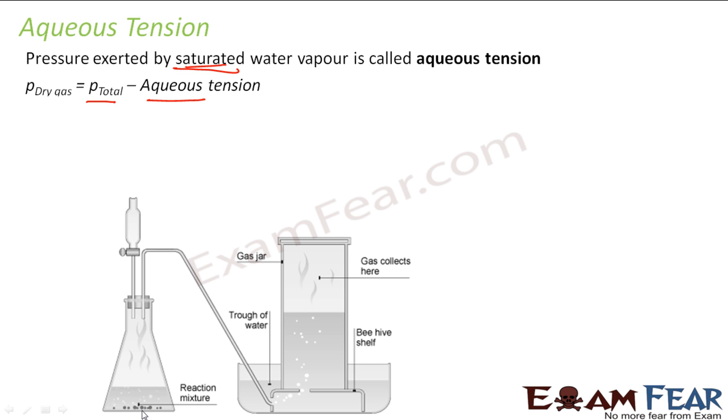And that is how you get pressure of dry gas. And that is why we have this aqueous tension also in the picture, because in the lab, most of the gas we collect is with this kind of instrument we call beehive cell, and there the water is involved. So any gas you collect here has this aqueous tension also. So subtract that part to get the pressure of the dry gas.